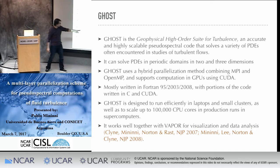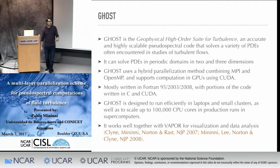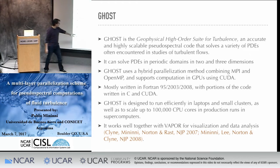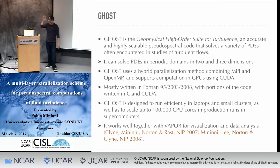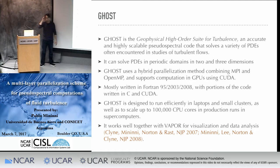The largest production runs we have done are on 100,000 cores, up to 6,000 GPUs and several tens of millions of CPU hours. Ghost works very well together with Vapor — the development went together in many ways — and Ghost comes with tools to transfer data to Vapor easily, integrating well for visualization and data analysis.